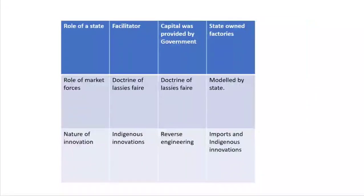The next feature is the role of the state. In Britain, the state played a facilitator role by enacting suitable laws. The government of Great Britain acted as a facilitator to industries through enacting suitable laws so that the rate of production would be comfortable enough to meet the rising demands. That is the role played by the British government.